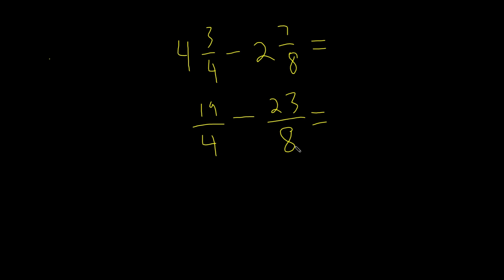This equals 4 times 8 is 32. 19 times 8, that's 152, and that's a little tough to do in your head, so you could use a calculator for that. Minus 23 times 4, that's 92. 152 minus 92, that's 60.